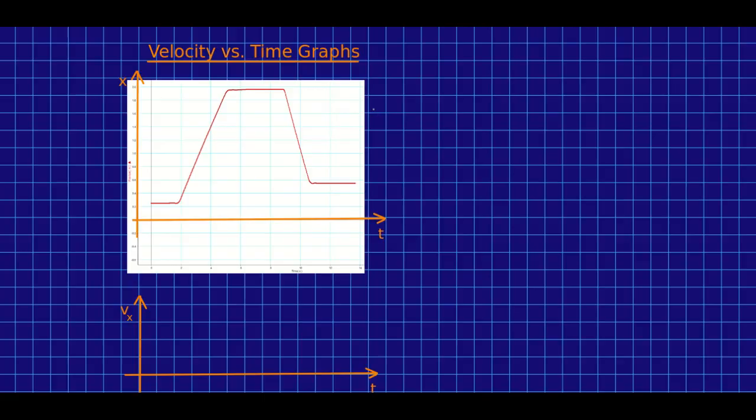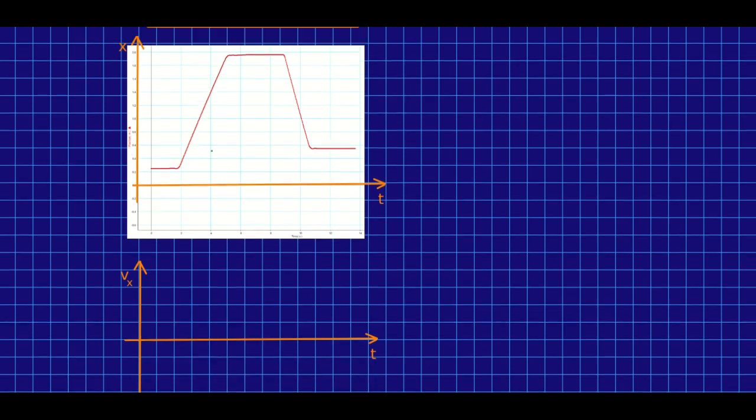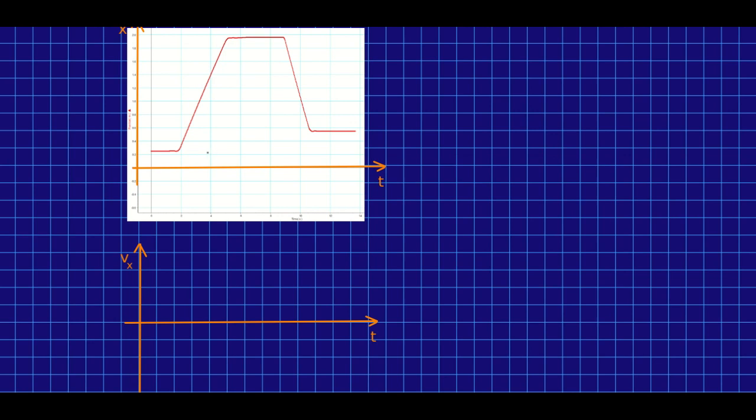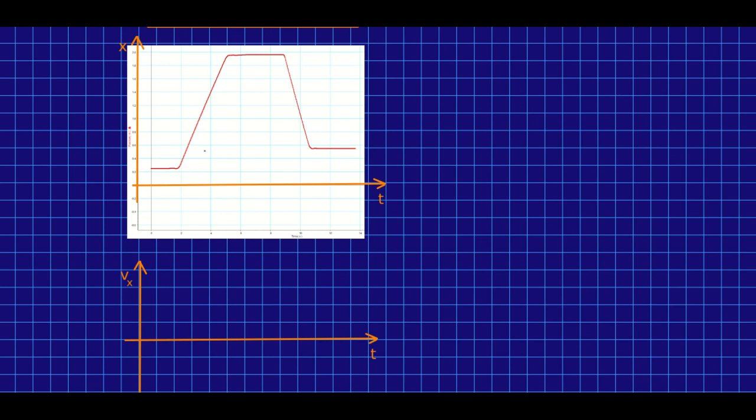Just as it can be very useful to represent motion using a position versus time graph, like this x versus t, it can also be useful to represent it using a velocity versus time graph, or rather a velocity component versus time graph. This motion we've been looking at is very easy to do that with conceptually. First of all, we can divide this motion into roughly five parts. From about this time earlier, the cart isn't moving. It has zero velocity, and we can see that by this horizontal line in the x versus t.